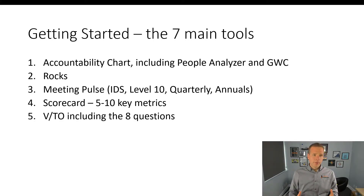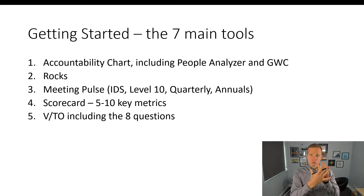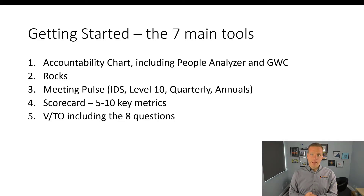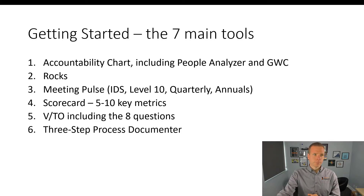A VTO is a Vision Traction Organizer — it's one page, or actually two pages because it's both sides of one sheet of paper. There's a vision side and a traction side showing how you get to that vision, answering eight questions around your core focus, niche, target market, and those sorts of things.